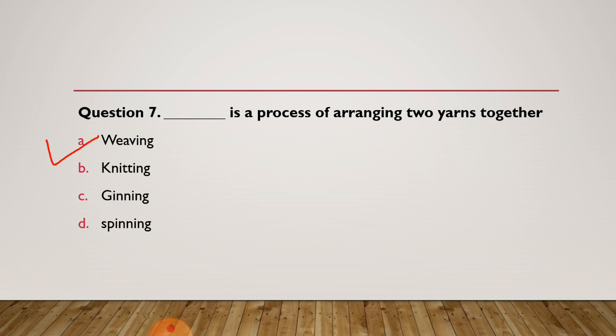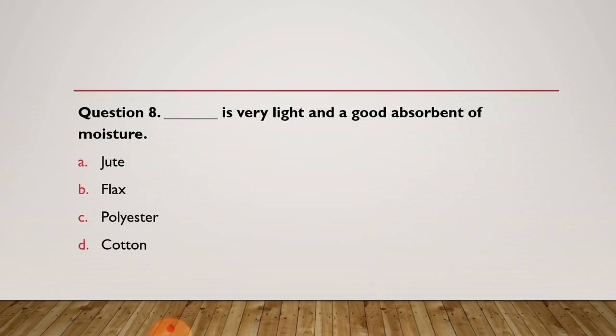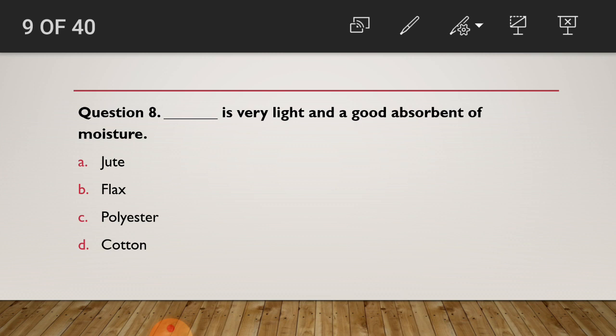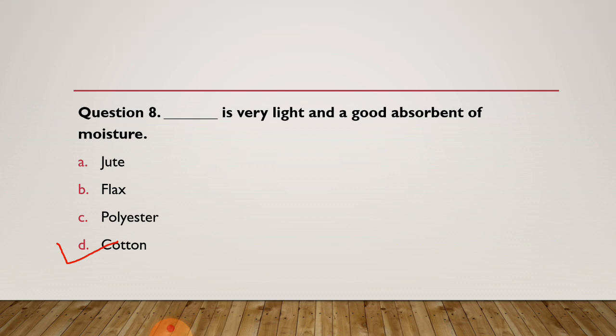Now moving to question 8: Dash is very light and a good absorbent of moisture. I know you can all answer this question — it is very easy. The right answer of question 8 is cotton. Cotton is very light in weight and a good absorbent of moisture. Is that clear, students? Did you choose this answer?